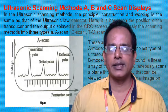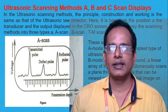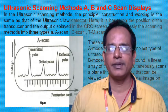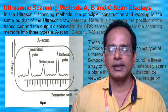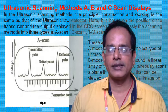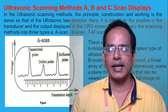We can classify the scanning method into three types: A-scan, B-scan, and C-scan or TM scan. A-mode is a simple type of ultrasound scanning. B-mode scanning uses an array of beams given to the body in a linear manner.